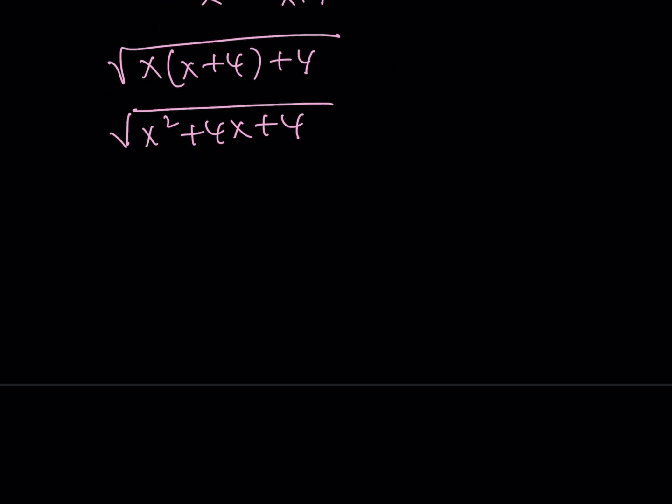And then the square root of x squared plus 4x plus 4 is equal to x plus 2 because x squared plus 4x plus 4 can be written as x plus 2 quantity squared.